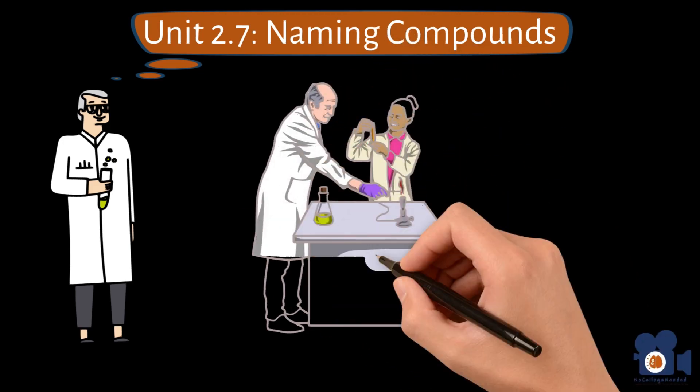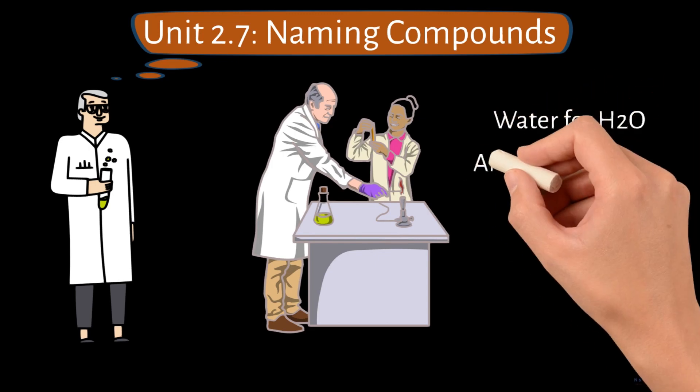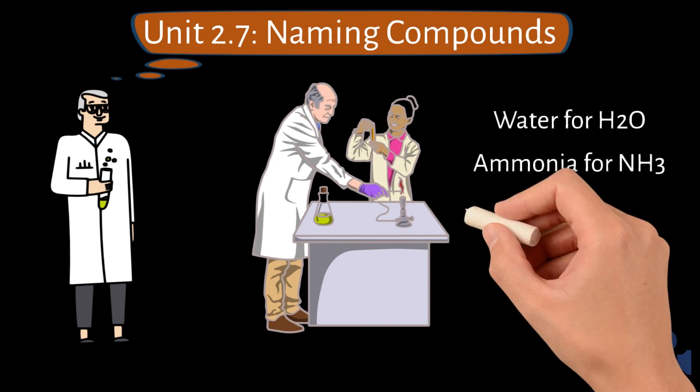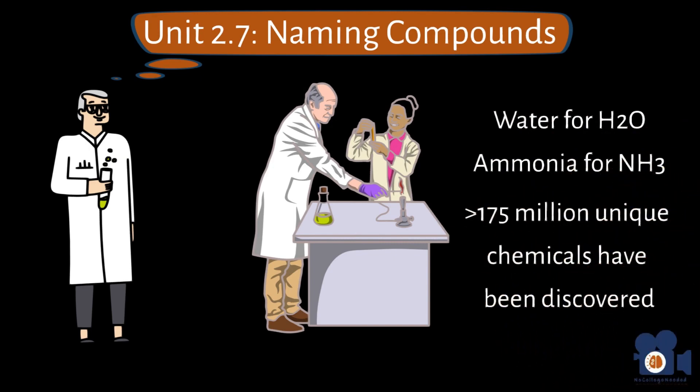In the olden days, chemists would give common names to the chemicals they were dealing with, for example, water for H2O and ammonia for NH3. However, with over 175 million unique chemical substances being discovered, we must switch from common names to a system.